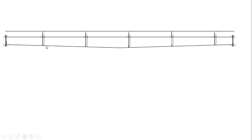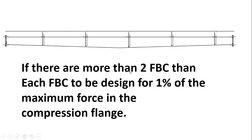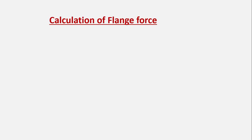So what that clause means: if there are multiple restraining points on a PEB rafter, the 2.5 percent restraining force is equally divided between them, but each restraint point must be designed for at least one percent of the maximum compressive force in the flange. If there are more than two FBCs, each FBC is to be designed for one percent of the maximum force in the compression flange.